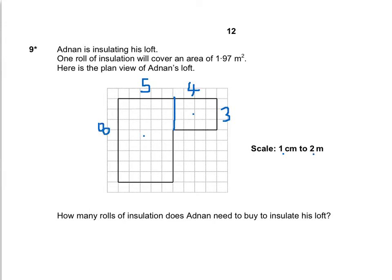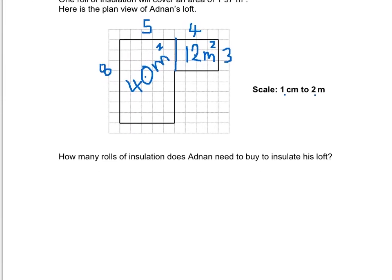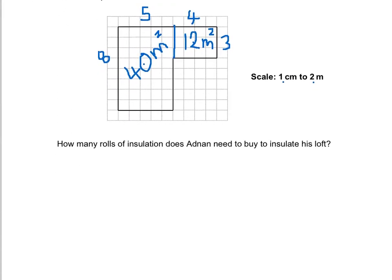So we can work out the areas of both of these rectangles. This here is going to be 40 metres squared, and this here is going to be 12 metres squared. If we add these two together, that tells us that the total area that he needs to cover is 52 metres squared.